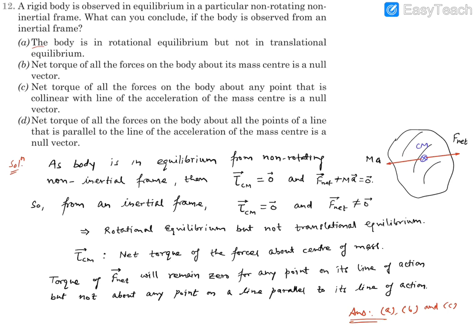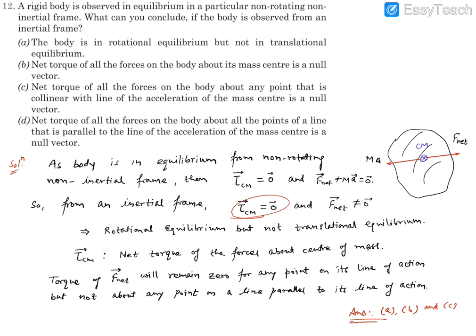Let's read option A. It says the body is in rotational equilibrium, but not in translational equilibrium. Yes — we just concluded it will not be in translational equilibrium. What about rotational equilibrium? This pseudo force came to balance the other forces, and the torque about the center of mass was already zero. So removing this pseudo force will not make any difference — the torque about the center of mass remains zero. That means torque will still be zero in the inertial frame, so there is rotational equilibrium but not translational equilibrium. Statement A is correct.